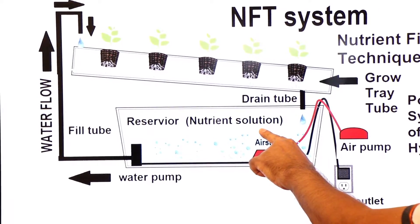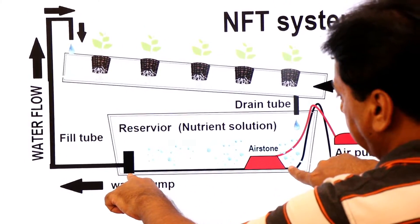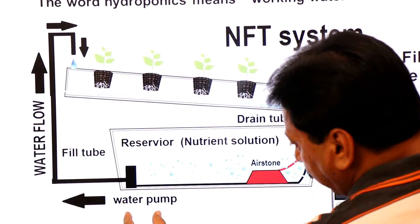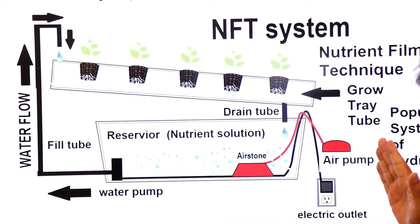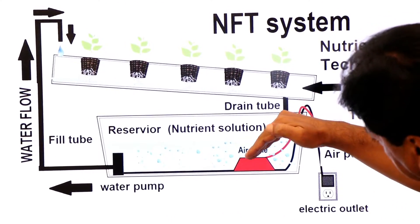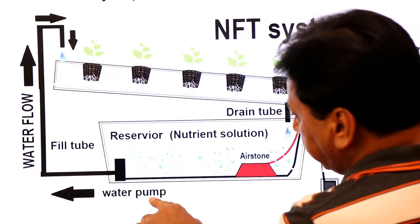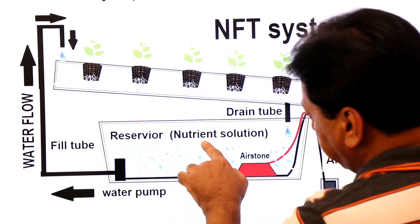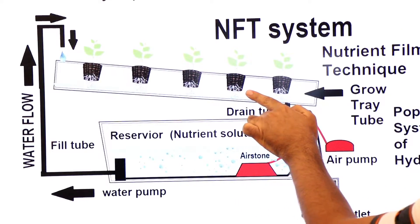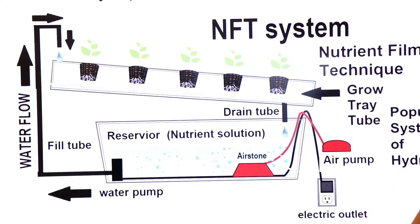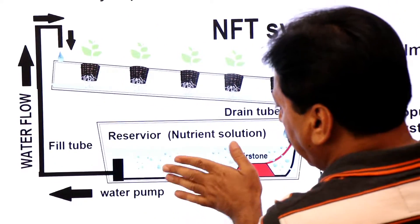In the reservoir, nutrients are dissolved. We will discuss which macro-nutrients and micro-nutrients are used. Two pumps are added to the reservoir: one water pump and one air pump. Through the air pump, oxygen is added to the reservoir. Through the water pump, the nutrients are supplied to the grow tray — the tube in which net pots hold the plants.